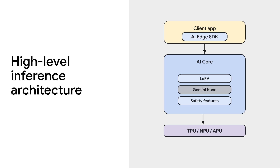This diagram describes the different layers of AI Core and how apps can interact with it. In the AI Core APK, the most important block is the Gemini Nano model. AI Core also includes a fine-tuning layer called low-rank adaptation, or LoRA for short, that allows app developers to customize a model to perform specific tasks. Apps can train their own specialized LoRA fine-tuning blocks to optimize the performance of the Gemini Nano model.